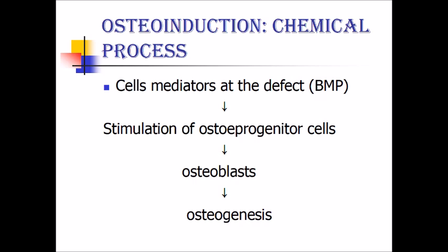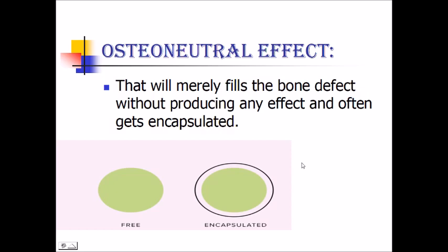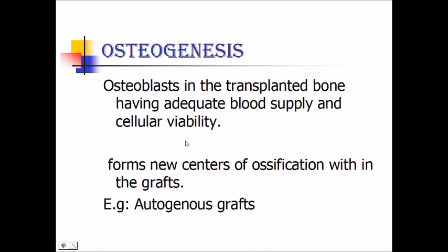Osteoinduction: a chemical signal — bone morphogenetic protein (BMP) — induces osteoprogenitor cells to form osteoblasts, and once osteoblasts form, they lay down bone. This process of induction is known as osteoinduction. Osteoneutral effect merely fills the bony defect without producing any effect and often gets encapsulated over time. Osteogenesis: osteoblasts in the transplanted bone, which have adequate blood supply and cellular viability, form new centers of ossification within the graft. Example: autogenous graft.